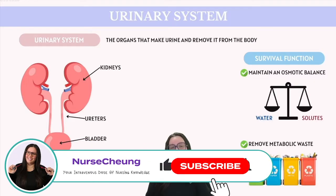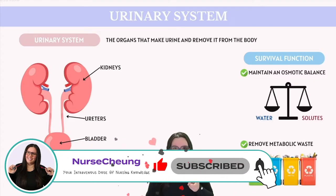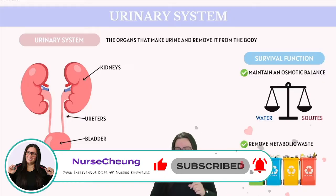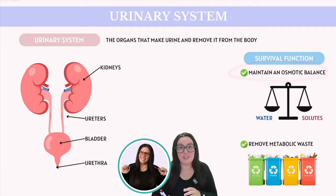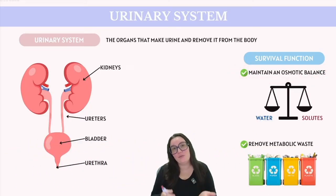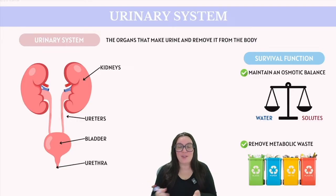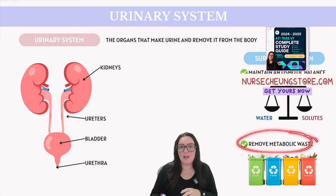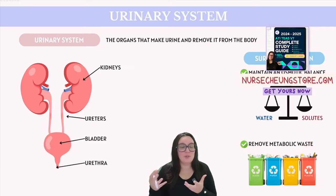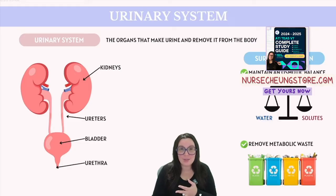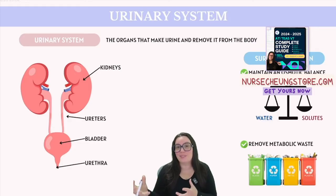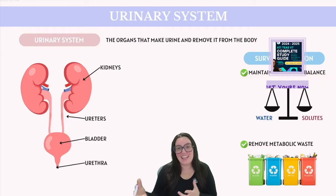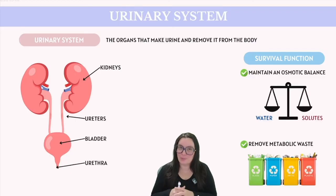Let's begin by tackling two crucial survival challenges. First, we need to maintain osmotic pressure, which is essential because it involves the regulation of water and solute levels found throughout our body. Secondly, the body must limit metabolic waste, which can include things like carbon dioxide and nitrogenous waste — byproducts of protein breakdown, a frequent occurrence in metabolic processes.